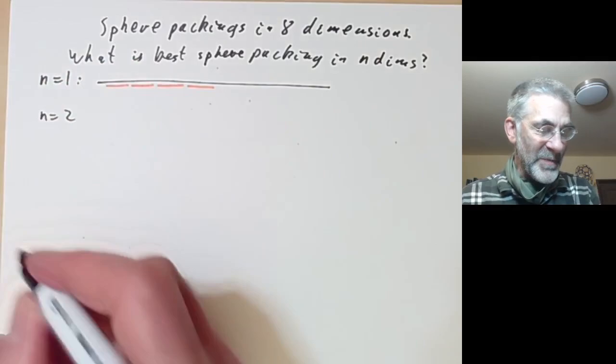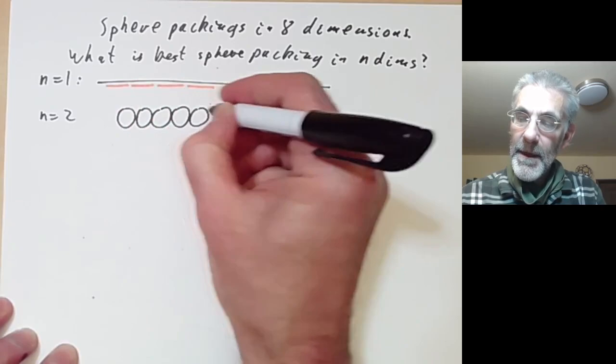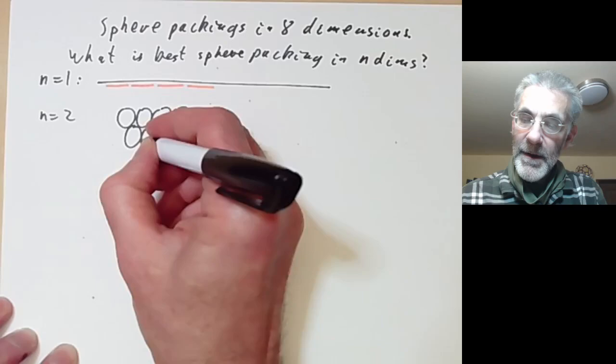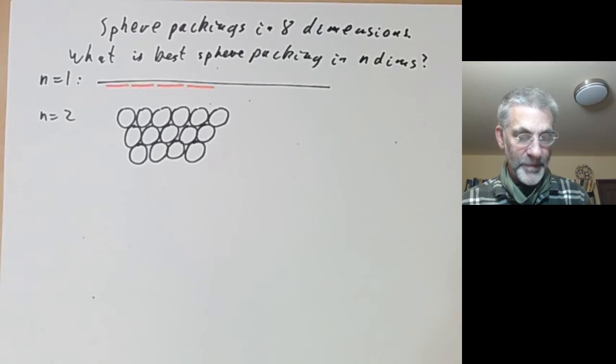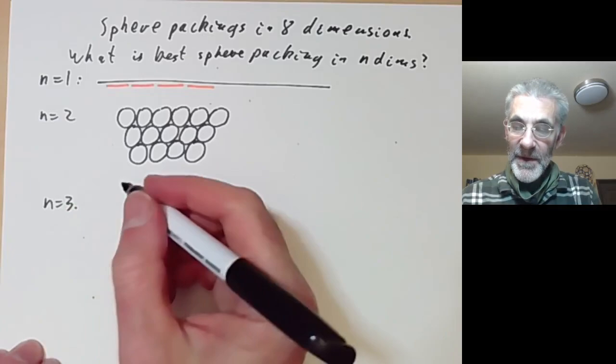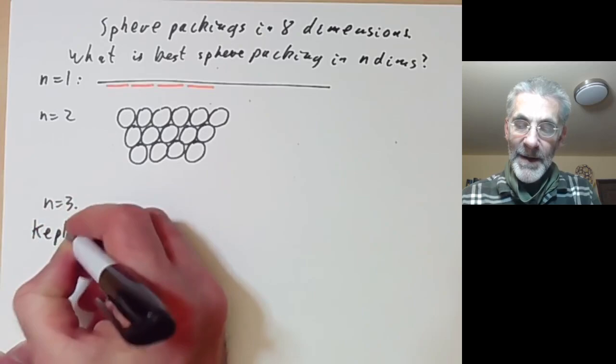For n equals 2, it's pretty obvious what the answer is. You pack spheres in rows offset from each other, and we get a hexagonal close packing. For n equals 3, the problem of the best way to pack spheres is a famous problem known as the Kepler problem or Kepler conjecture.